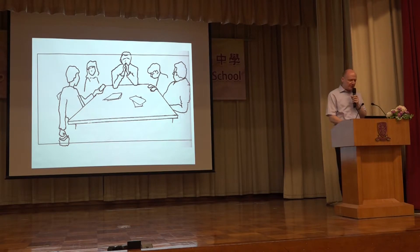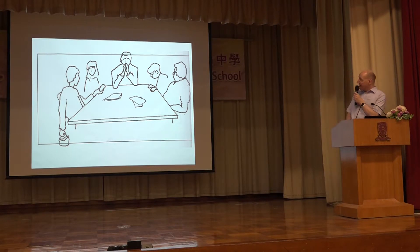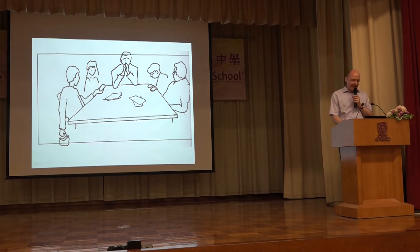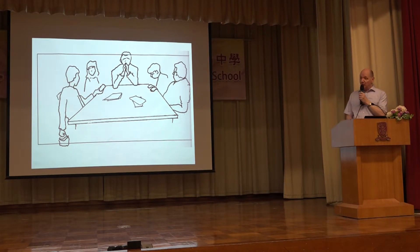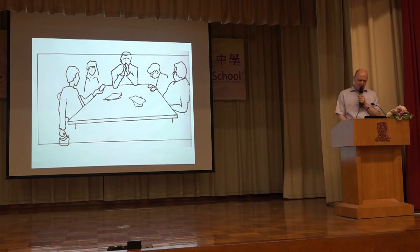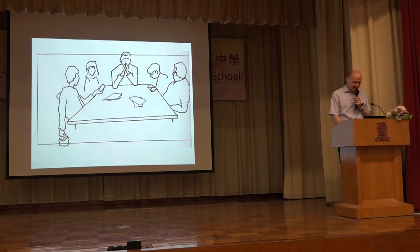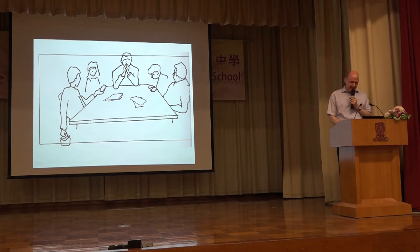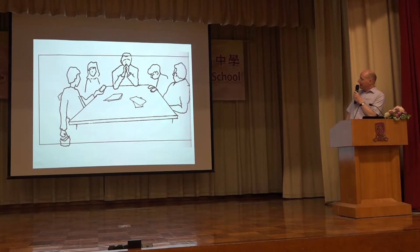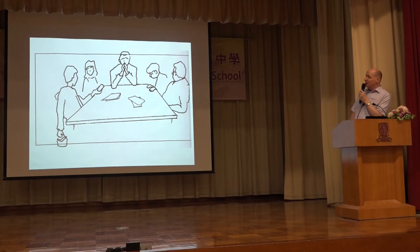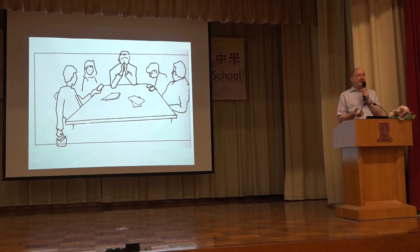We don't know exactly what's going on. We have some data, but some is missing. It could be a family before a meal and the father is praying. It could be a group of friends having a very difficult conversation, an argument. It could be people thinking how to solve a problem. It could be a family that's just received a very sad letter from a relative. It could be somebody handing out food to the other people. We don't know.